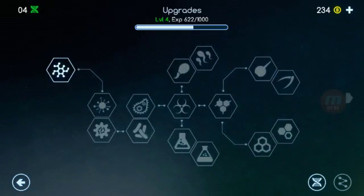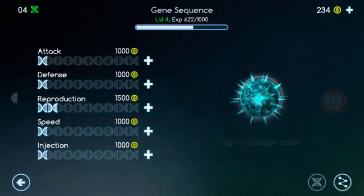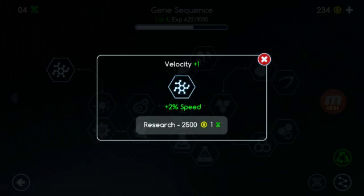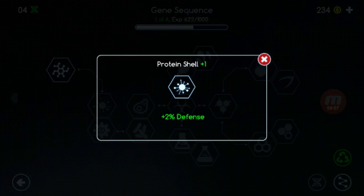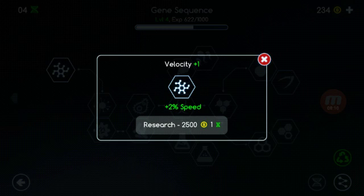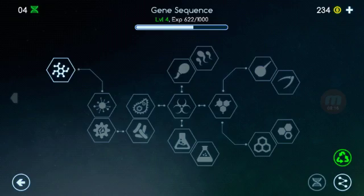Over here we got a perk tree pretty much. They all take these little green DNA points that you get for leveling up. And yeah it costs money, sucks about that but it gives you 2% increase to certain things.